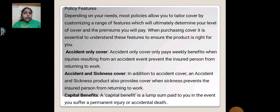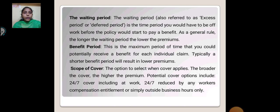Capital Benefit: A capital benefit is a lump sum paid to you in the event you suffer a permanent injury or accidental death. The Waiting Period, also referred to as the excess period or deferred period, is the time you would have to be off work before the policy starts to pay benefit. As a general rule, the longer the waiting period, the lower the premium. The Benefit Period is the maximum period of time you could potentially receive benefit for each individual claim; a shorter benefit period will result in a lower premium.